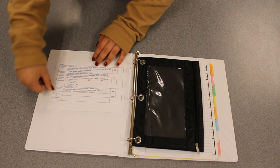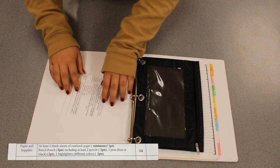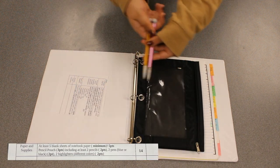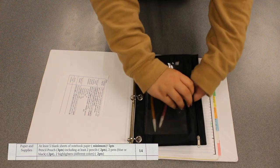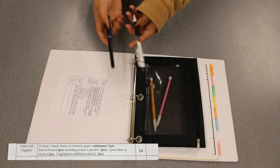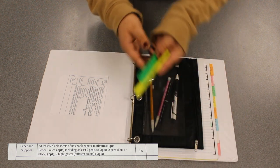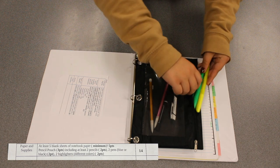So we're gonna look at the paper and supplies section. This is your pencil pouch and every pencil pouch you're gonna have at least two pencils, two pens either black or blue. I have two black pens and you're gonna have two highlighters that are two different colors.